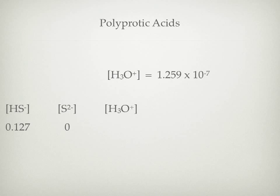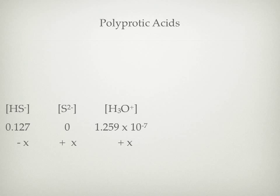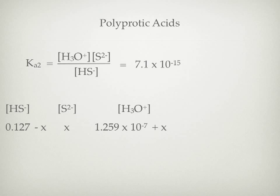Now we're going to set up an ICE table for the second deprotonation, the one in which HS⁻ goes to S²⁻ and a hydronium ion. We'll bring our value for HS⁻ into the table. The initial problem gave us the pH, and from that we can determine the H₃O⁺ concentration at equilibrium. The change row has the reaction shifting right: minus x for HS⁻ and plus x for the other two species.